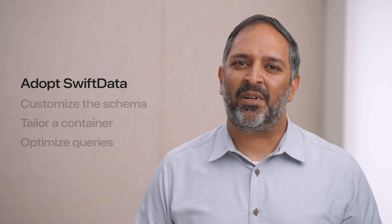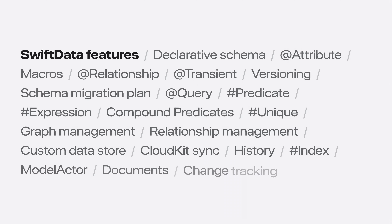First, let's take a quick tour of Swift Data. Swift Data is a framework that makes it easy to build your app's model layer and persist it across launches of your app. The framework not only provides persistence, but modeling and migration of your schema, graph management, synchronization with CloudKit, and so much more. To show you how easy it is to adopt Swift Data in your app, let me show you an app that me and the team have been working on — Trips.